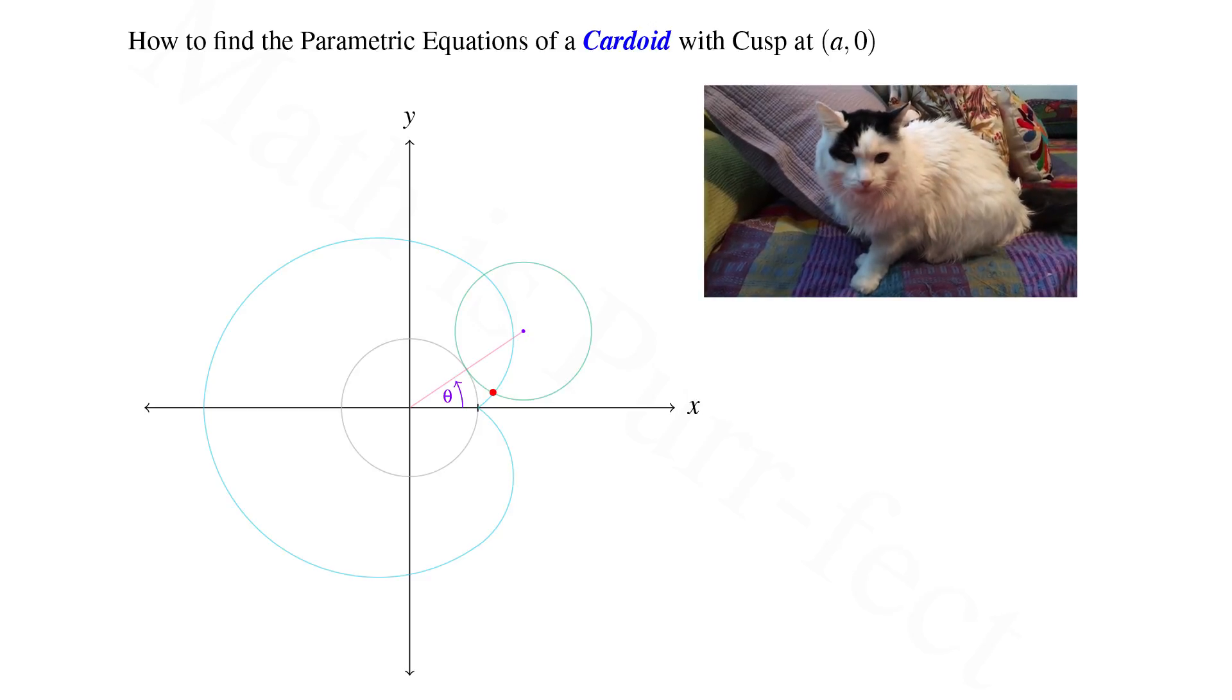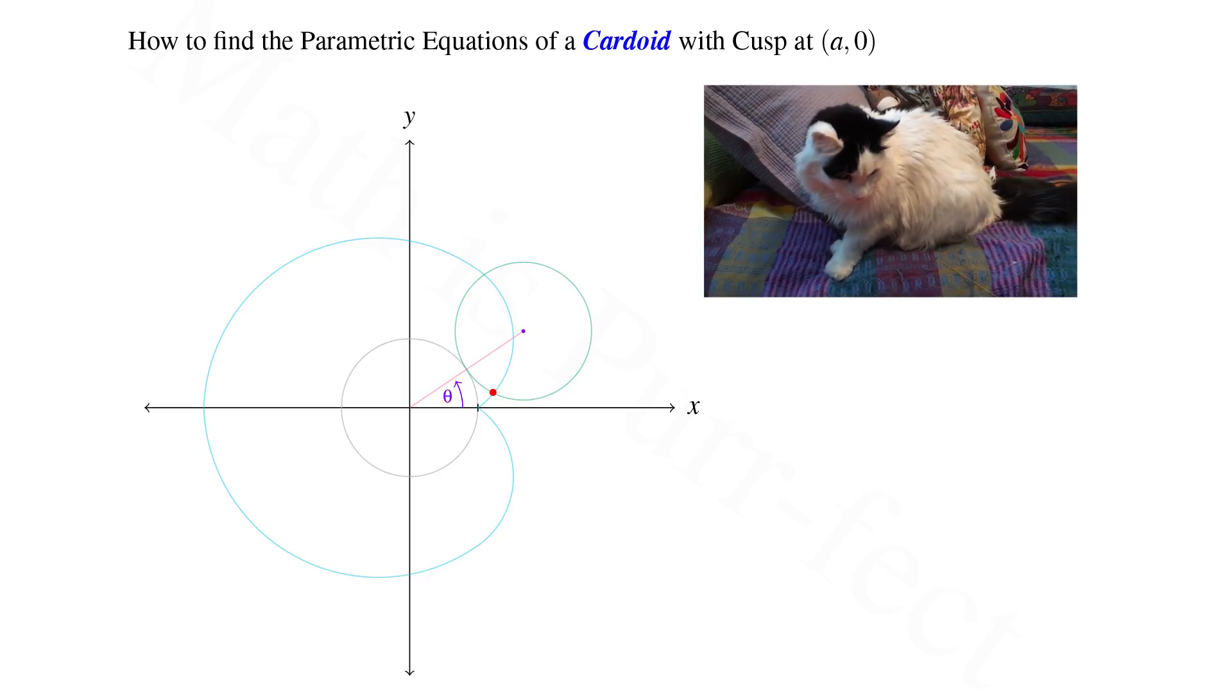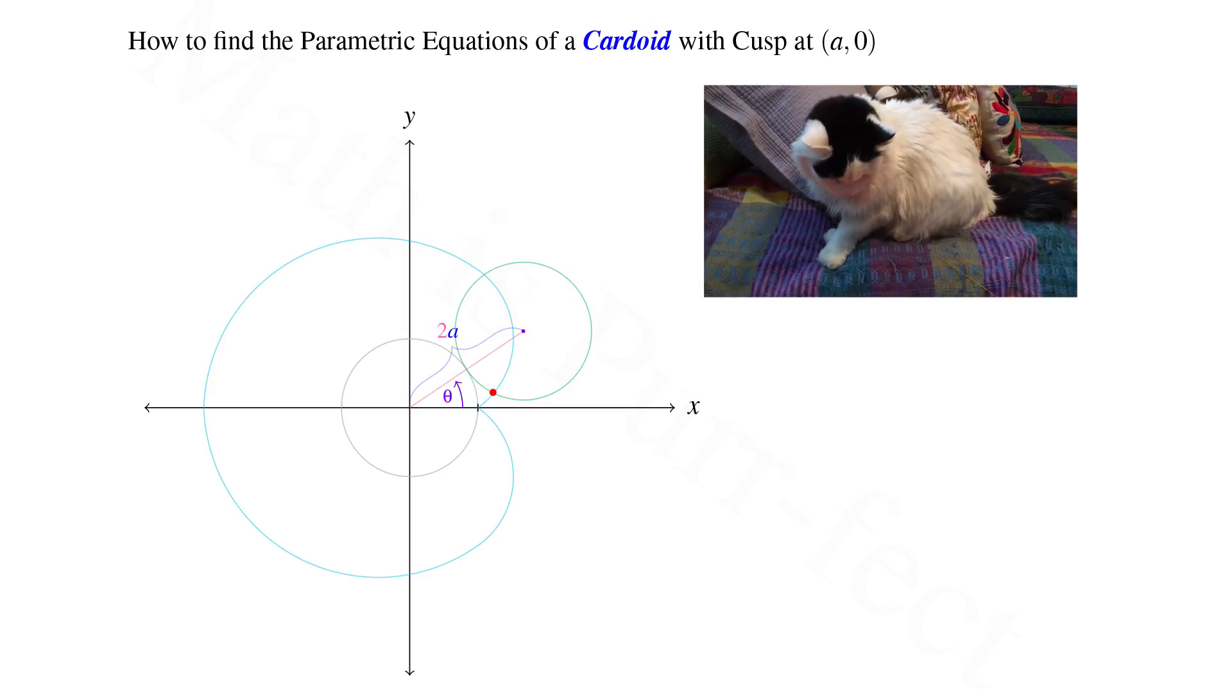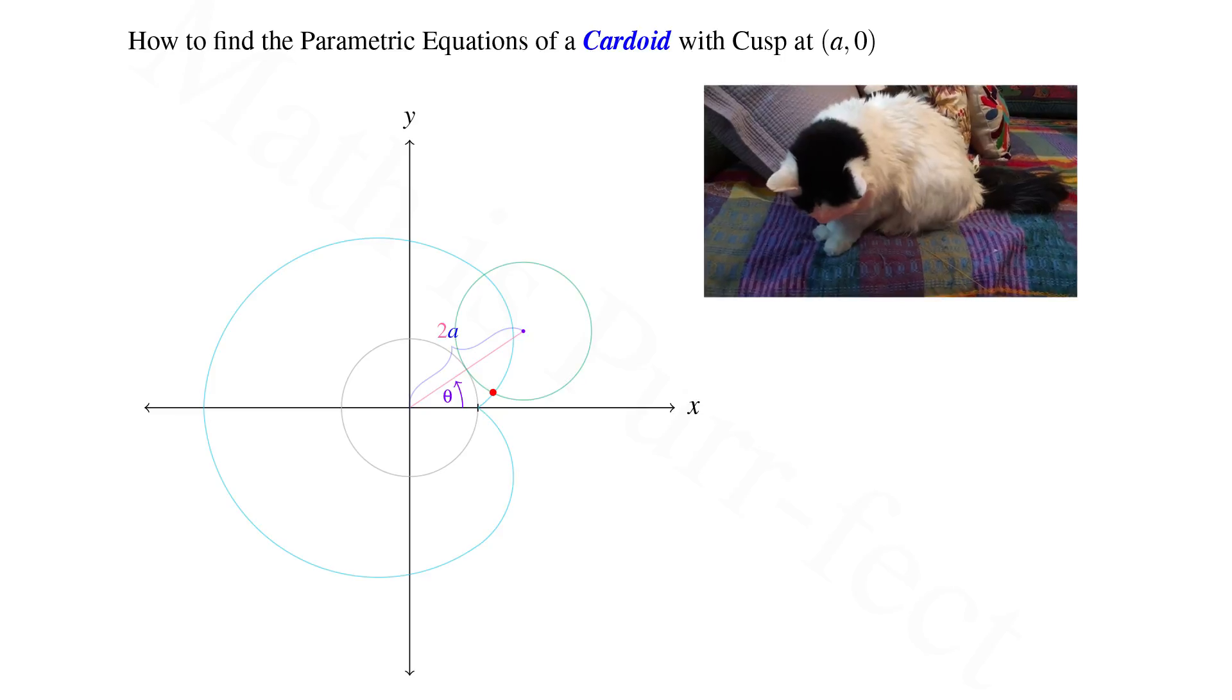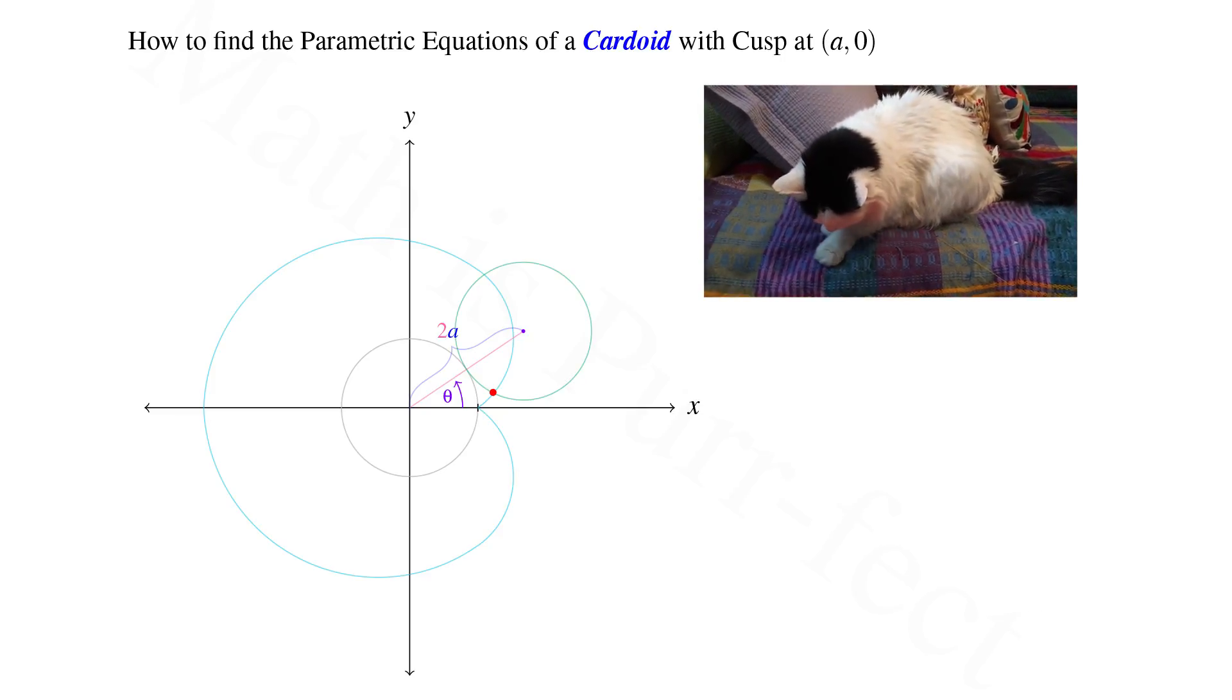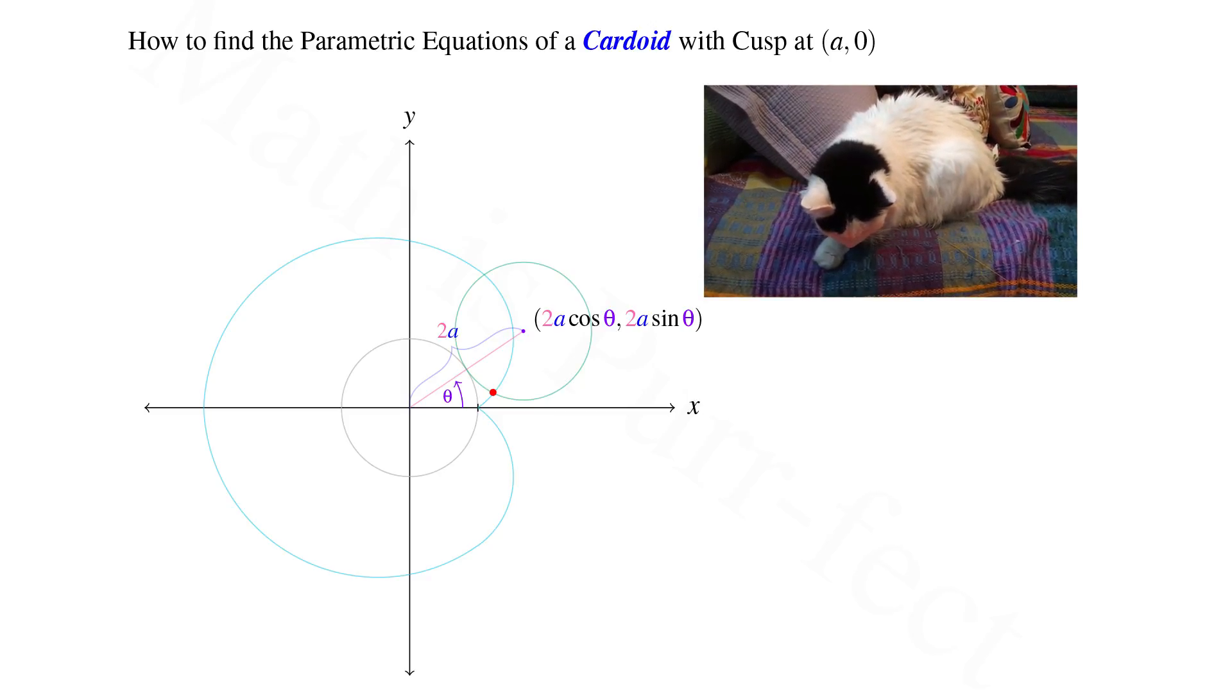Given two circles of radius a are adjacent to one another, we note that the center of the exterior circle is at a distance 2a from the origin. Hence, the polar coordinates for x and y at that point are given as 2a cosine theta and 2a sine theta, respectively.